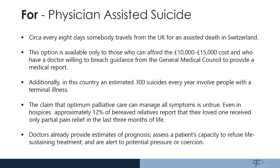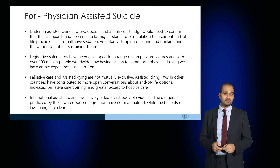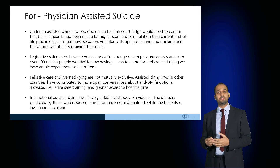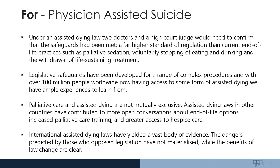Doctors already provide estimates of poor prognosis and patients may not have the capacity to deal with this decision. Under an assisted dying law, two doctors and a High Court judge would need to confirm that safeguards have been met to provide a safety net. Palliative care and assisted dying are not mutually exclusive and there may be areas of overlap.